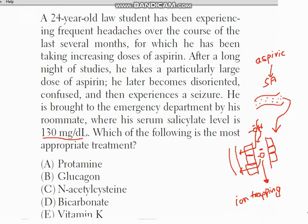One of the answer options is protamine. As discussed, protamine sulfate is used in the case of overdose of heparin — it is the antidote for heparin overdose. Heparin is an anticoagulant medication.